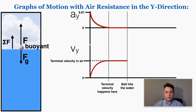Water pushes back on things much more strongly than air does — it's much easier to move your hand through air than through water. So suddenly there's a much larger force pushing up on the ball than pushing down, meaning the net force is pointing up. That means the acceleration is also pointing up, so on the graph the acceleration suddenly jumps to a negative value, because we're considering down to be positive.